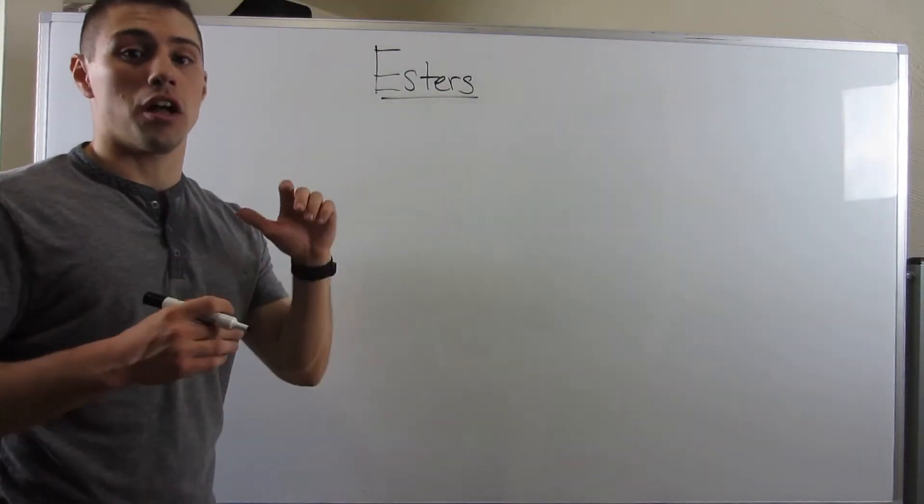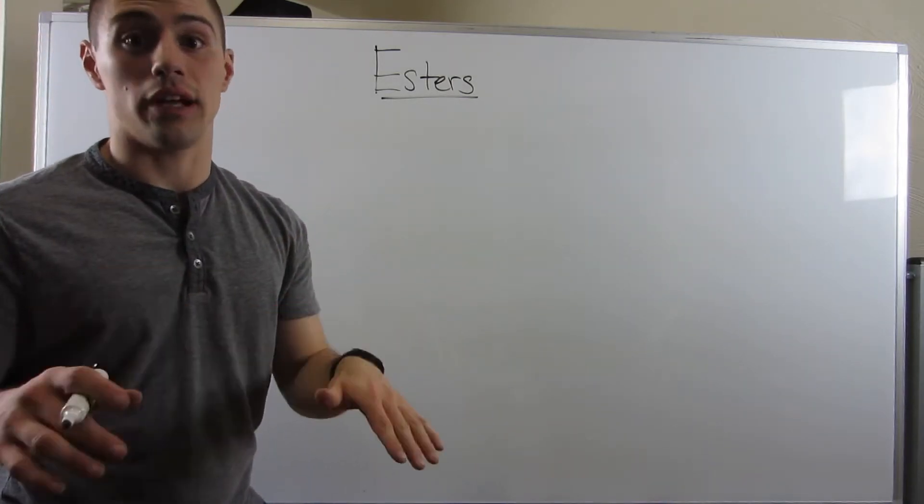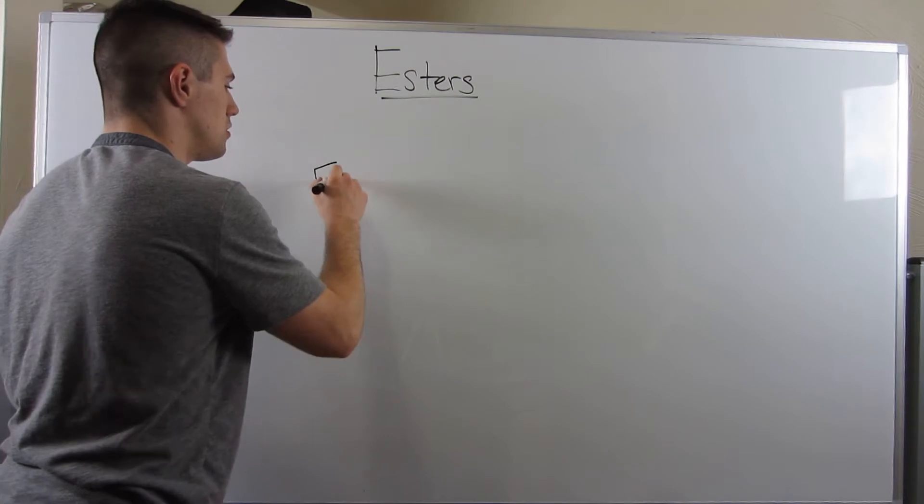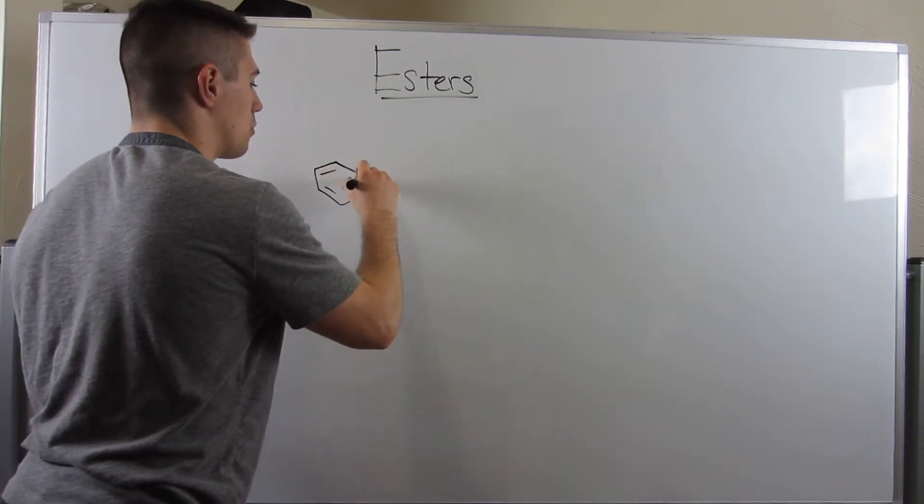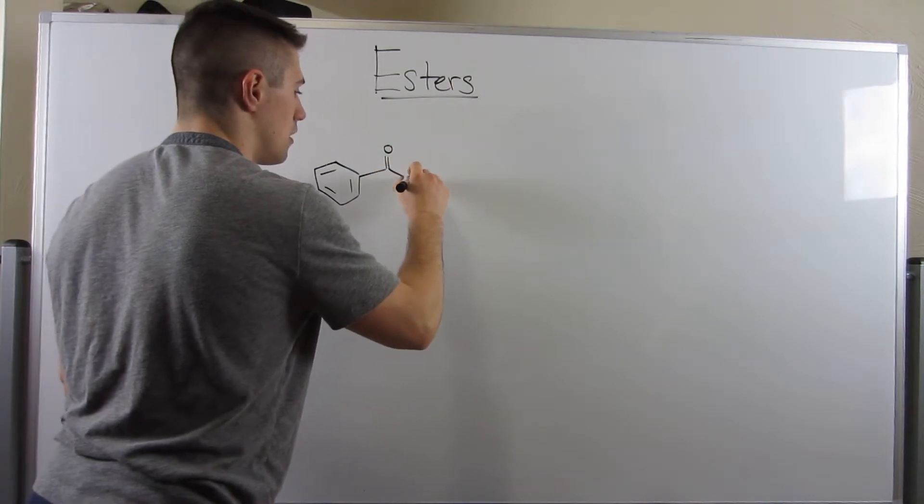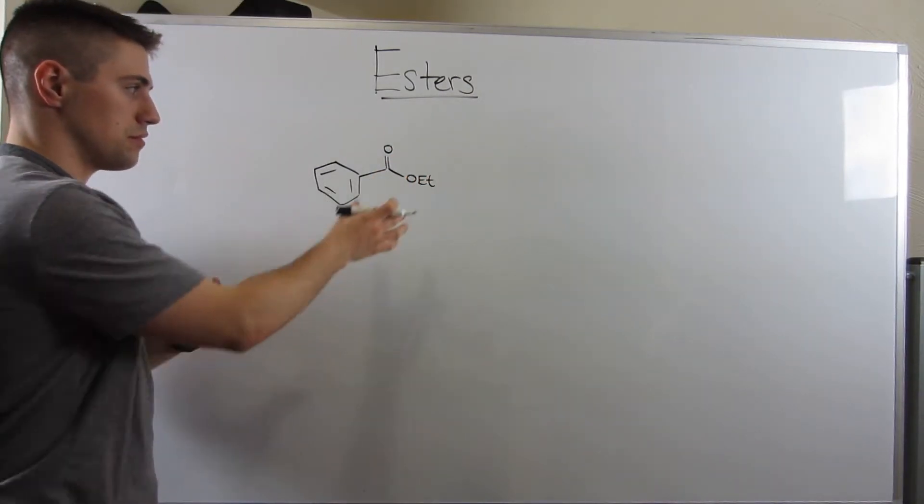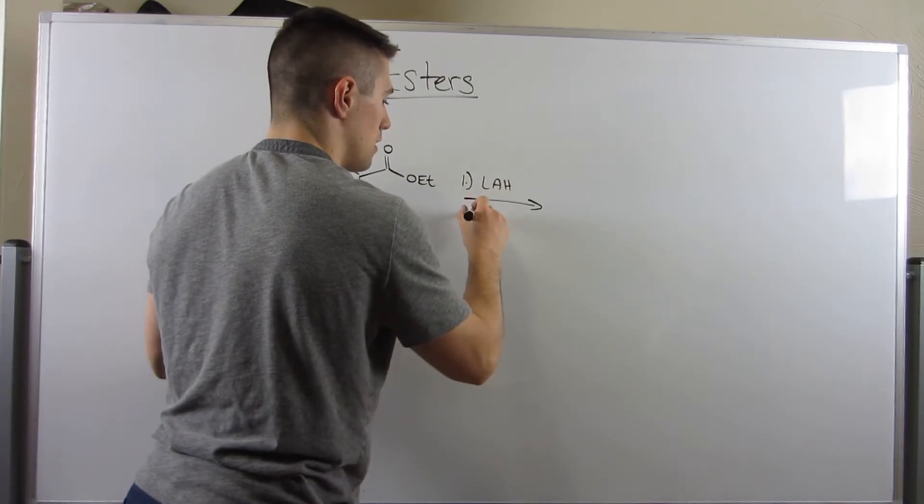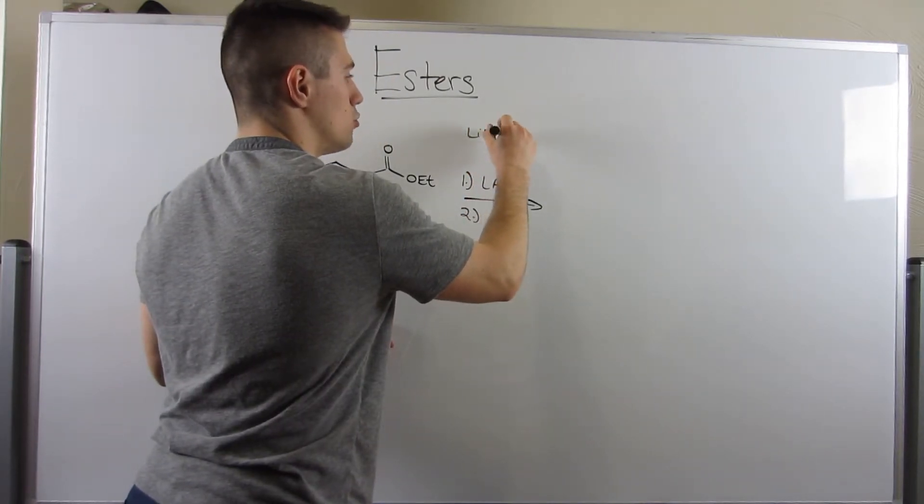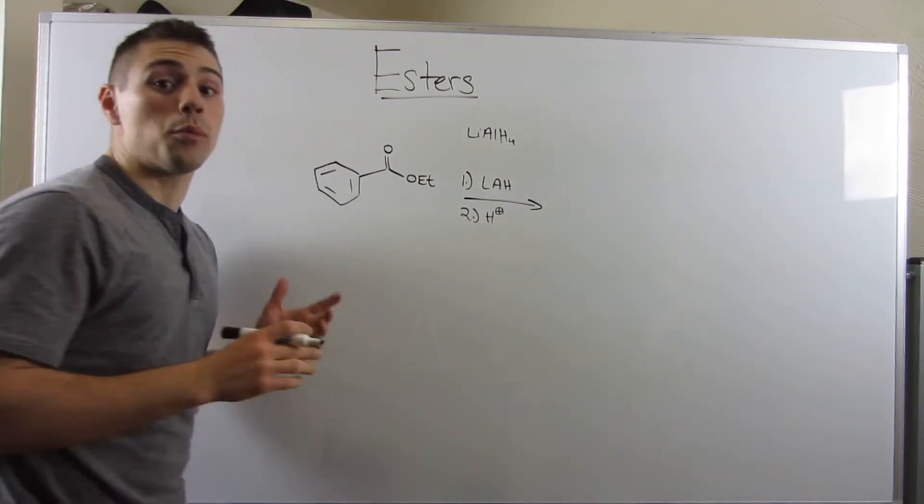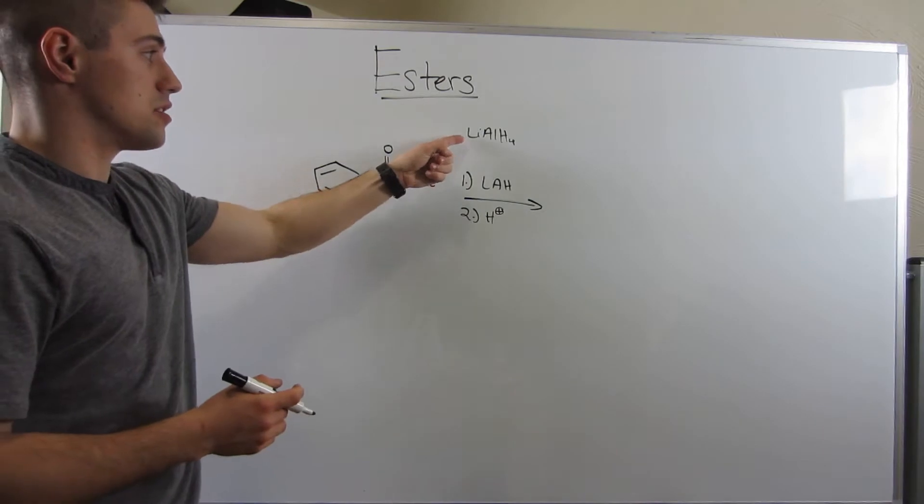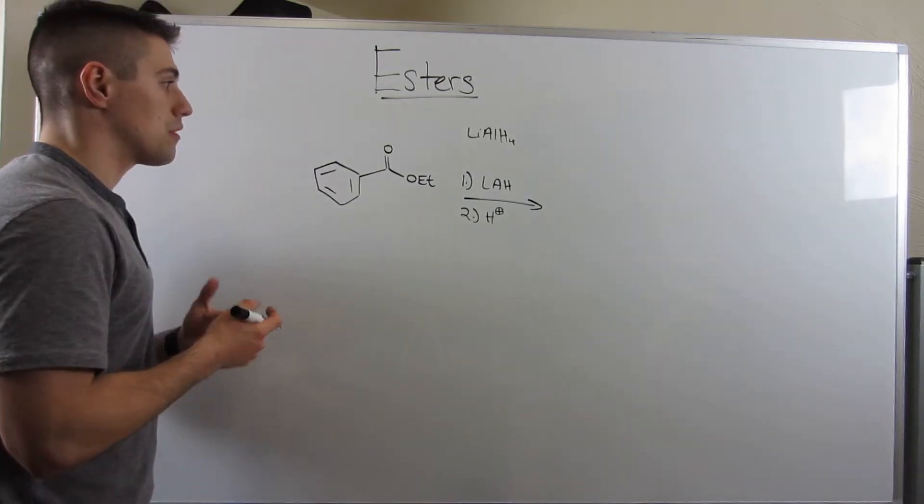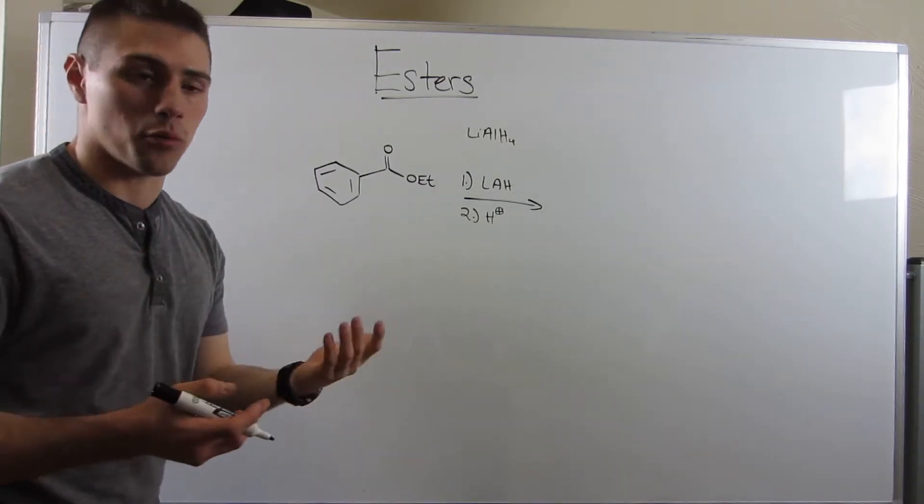We're going to do an ester reaction with a hard nucleophile and call this video quits. Instead of a Grignard, because we've done that before, let me show you what happens when you have an ester like this. Let me show you what happens when you do a first step of LAH - lithium aluminum hydride - and clean up with acid. Remember, this is a source of H-, and this is our only source of H-, where it's a hard nucleophile. What do we get? We know we get double attack, but let's see it at work.